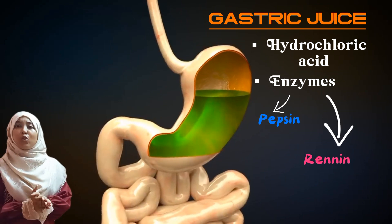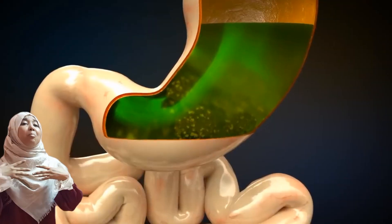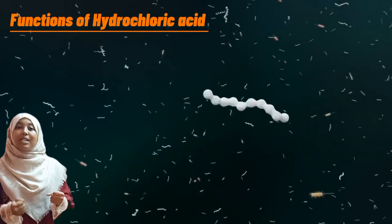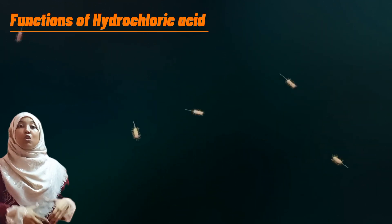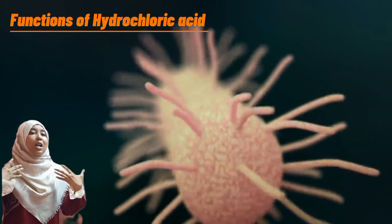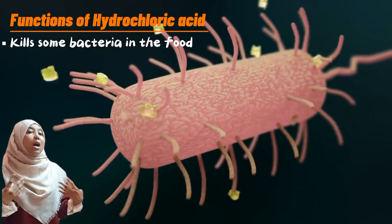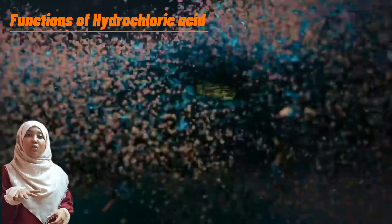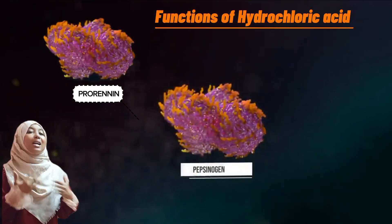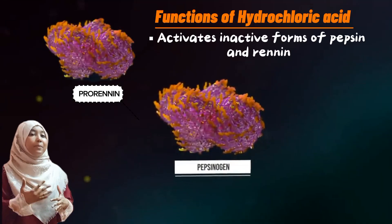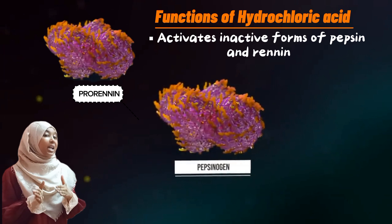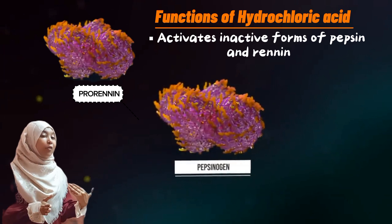What is the function of hydrochloric acid? First, the hydrochloric acid in our stomach is strongly acidic — it has a pH of two — so it kills a lot of the bacteria present in our food. Another function of the hydrochloric acid is that it activates pepsin and rennin.